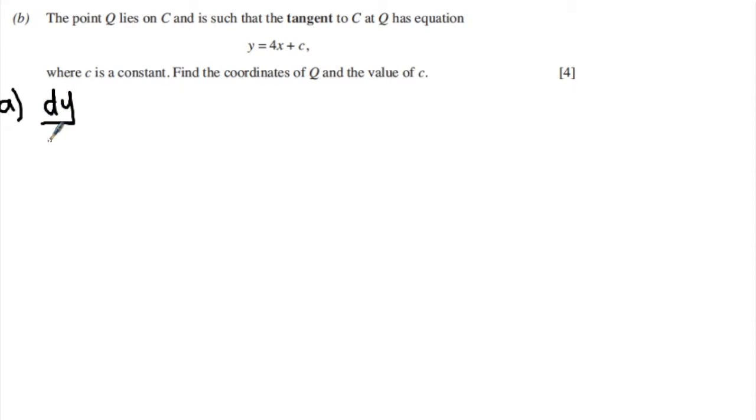So dy by dx, differentiating the function of the curve, we get 2 times 1, which is 2x. Decrease the power from 2 to 1. I don't bother writing the 1. Minus, differentiate 8x, I just get left with 8. And differentiate the constant, it disappears.